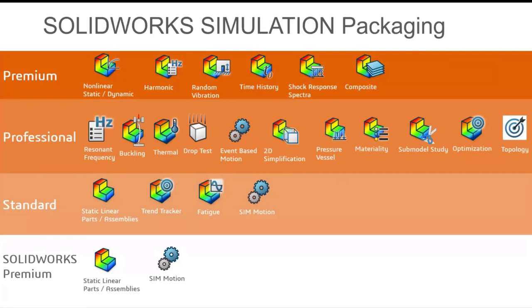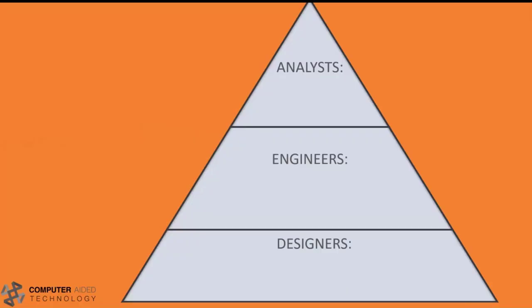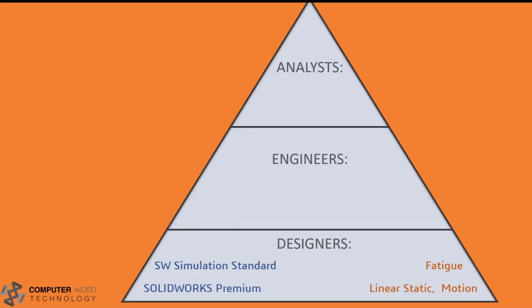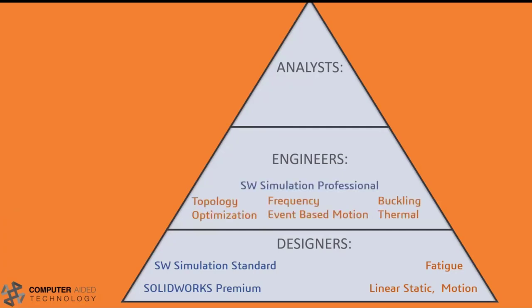SPE kind of takes over from the Simulation Premium level on, and it does have some of the nice features you see in Pro and Standard as well. I put together a pyramid based on where SPE, or Structural Professional Engineer, fits into the simulation suite of tools. At the designer level you have SOLIDWORKS Premium giving you linear static analysis and motion capabilities. SOLIDWORKS Simulation Standard adds fatigue, and when you get to the engineering level you start adding more complexity — things like topology optimization.